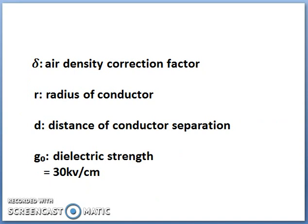Delta is the air density correction factor. R is the radius of the conductor and D is the distance between the two conductors. G₀ is the dielectric strength, which equals 30 kilovolts per centimetre when the temperature is at 25 degrees centigrade and the air pressure is at 76 centimetres of mercury.